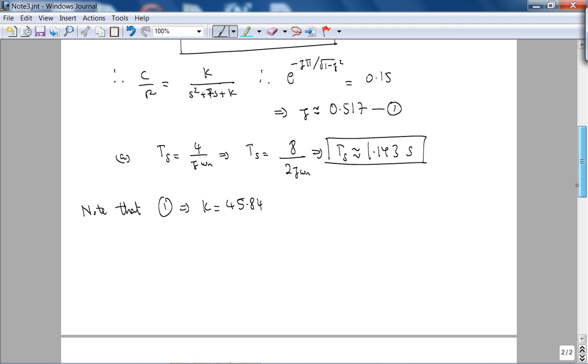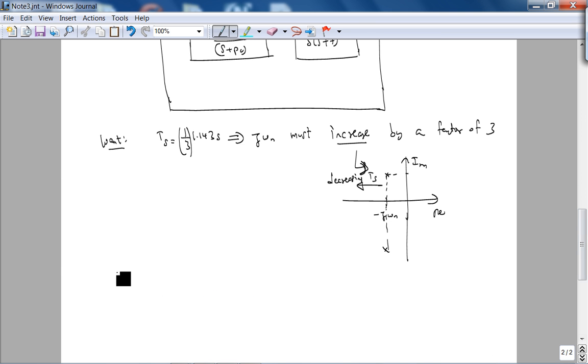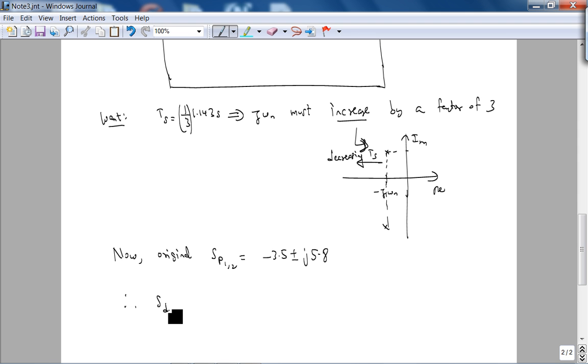Therefore, going back, using this value of k, plugging it in, now original close-loop poles, sp1, sp2, were at negative 3.5 plus or minus j 5.8. Therefore, as desired, it's going to be three times this, so it's going to be, this is minus zeta omega n, so you multiply it by three, you're going to get negative 10.5. But the point is, let's systematically increase this also by a factor of three, so plus or minus 17.4j. That's what you want the desired poles to be at.